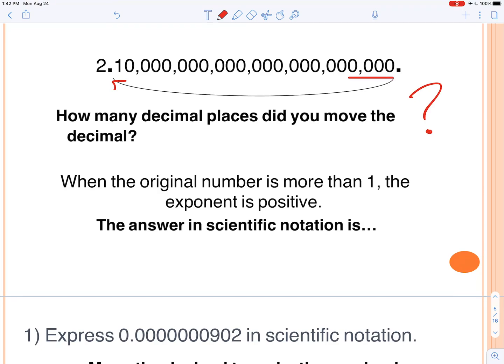So let's count together. 1, 2, 3, 4, 5, 6, 7, 8, 9, 10, 11, 12, 13, 14, 15, 16, 17, 18, 19, 20, 21, 22, 23 spots total.